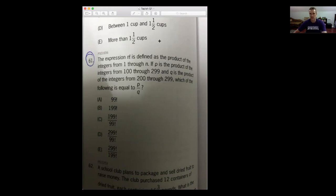The question itself is: if p is the product of the integers from 100 through 299, so not quite 299 factorial because that would include the numbers 1 all the way up until 99. We're starting at 100 and multiplying that by 101, 102, 103, all the way up until 299. And q is the product of the integers from 200 to 299. Which of the following is equal to p over q? Let me go ahead and recreate it on the whiteboard.